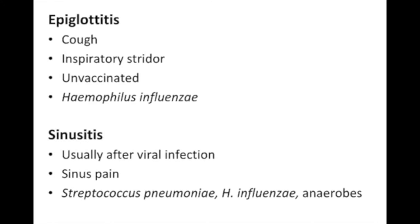Sinusitis almost always occurs after a cold — a viral illness causes irritation of the drainage tracts, allowing bacteria to grow in stagnating secretions in the sinuses. The typical presentation is someone sick for a while with head congestion and frontal or maxillary tenderness. The bugs to think about are Strep pneumo, Haemophilus influenzae, and anaerobes. The key clue for anaerobes is very foul-smelling discharge, because anaerobes produce hydrogen sulfide gas — very stinky.